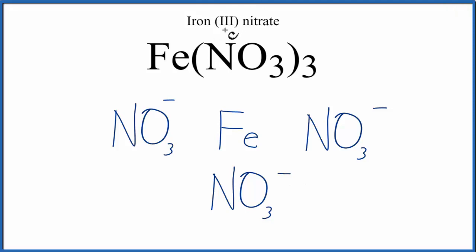So that plus 3 tells us iron lost the 3, and it lost them to these nonmetals. Because it lost 3 and we have this 3 here, we'll put a 3+ for its charge.